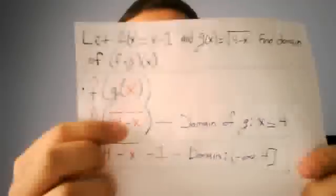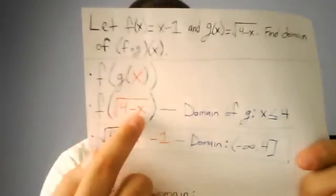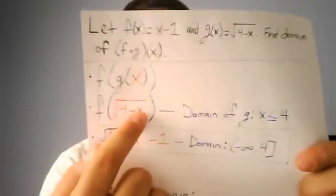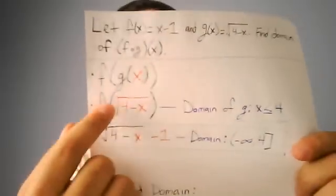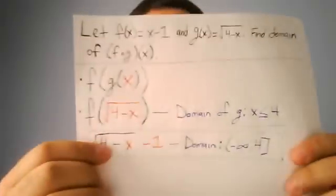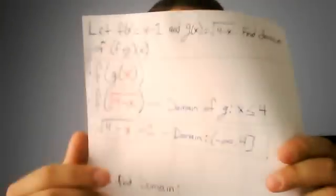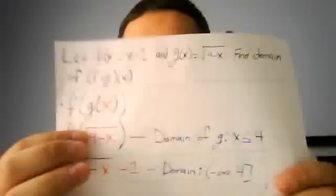This is because if you plug in anything more than 4 here, this whole number inside here would be negative, and you can't have a negative under the square root. So that's why you have this here.